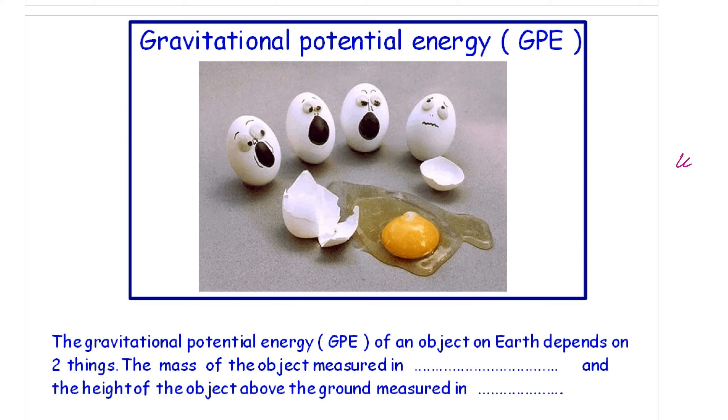Look at those poor eggs there. I think one of the eggs has been dropped from a large height. GPE, gravitational potential energy of an object on Earth depends on two things. It's the mass of the object, measured in kilograms, and the height of the object above the ground, measured in meters.